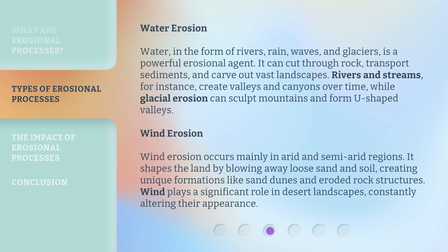Water Erosion. Water, in the form of rivers, rain, waves, and glaciers, is a powerful erosional agent. It can cut through rock, transport sediments, and carve out vast landscapes. Rivers and streams, for instance, create valleys and canyons over time, while glacial erosion can sculpt mountains and form U-shaped valleys.